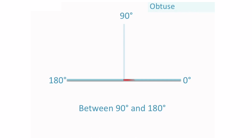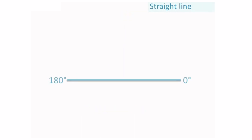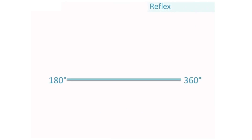Obtuse angles are angles that are between 90 degrees and 180 degrees. The following angles are all obtuse angles. A straight line is exactly 180 degrees.